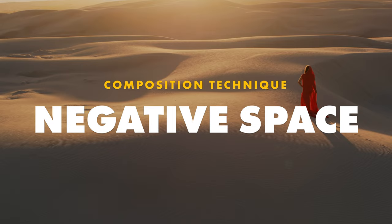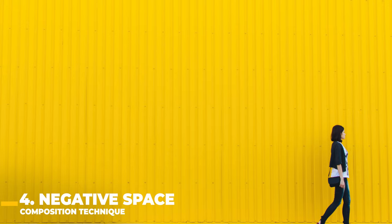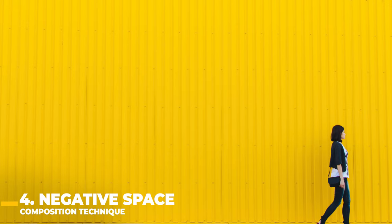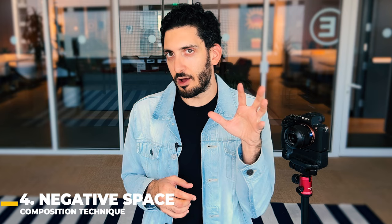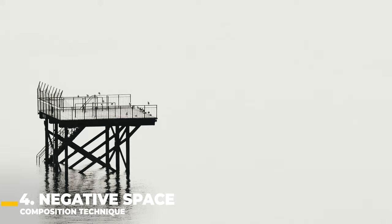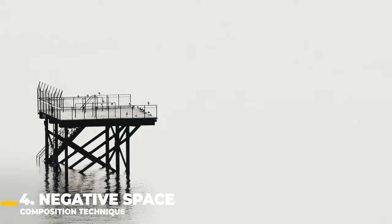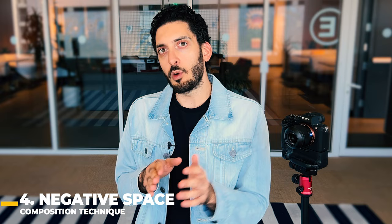Negative space in a photograph refers to areas in the image that are left mostly open — things like a sky or a blank wall. This is going to make your subject stand out and allow you to create a deeper emotion within that photograph, like tranquility or maybe mystery. Negative space isn't always going to work, but it's important to be familiar with the technique so that when the opportunity arises, you'll know exactly how to use it.